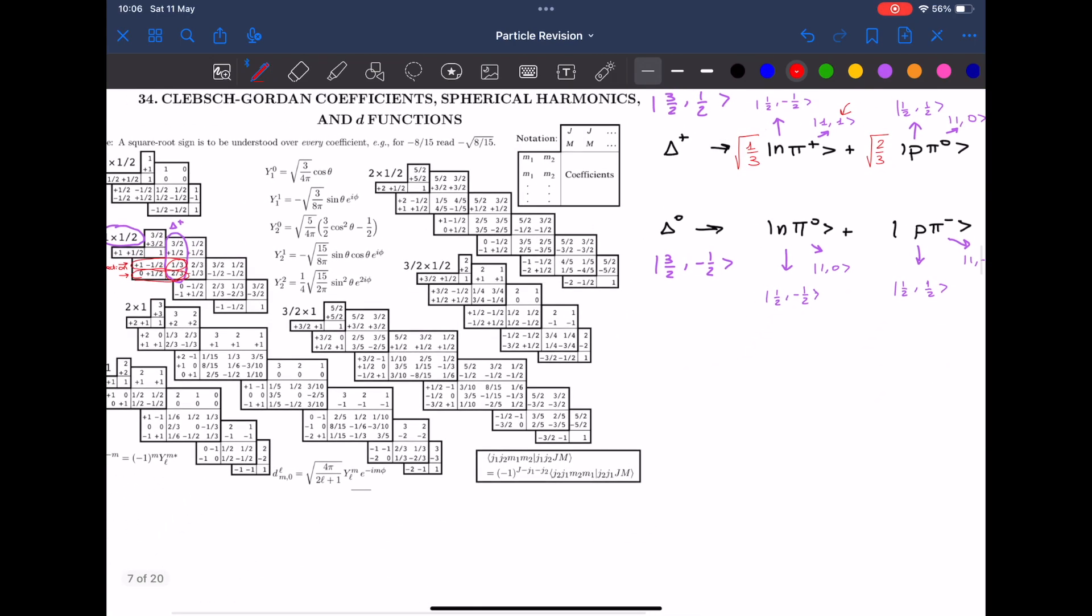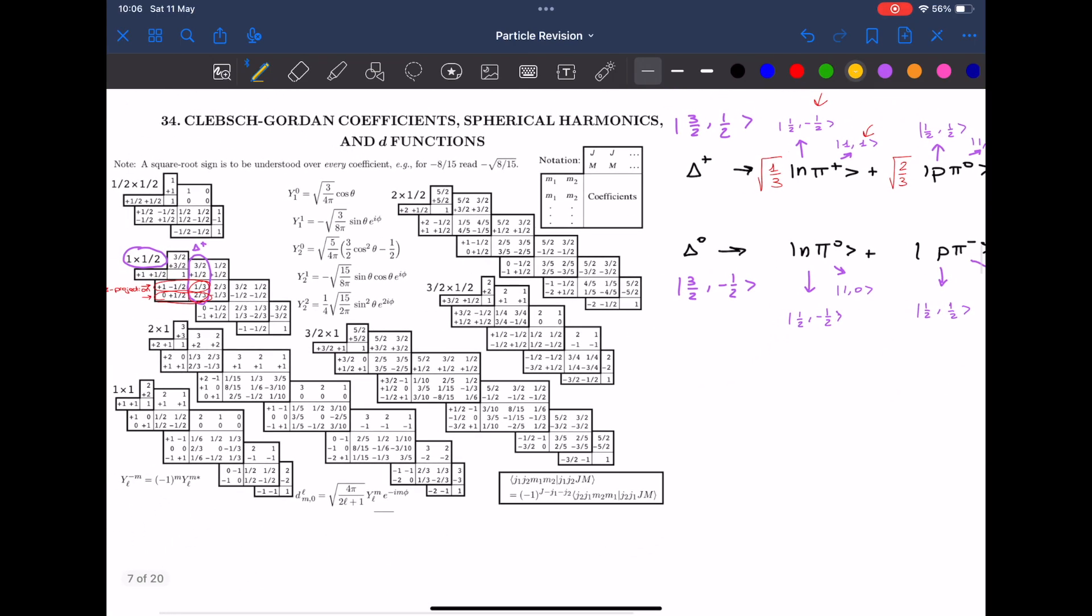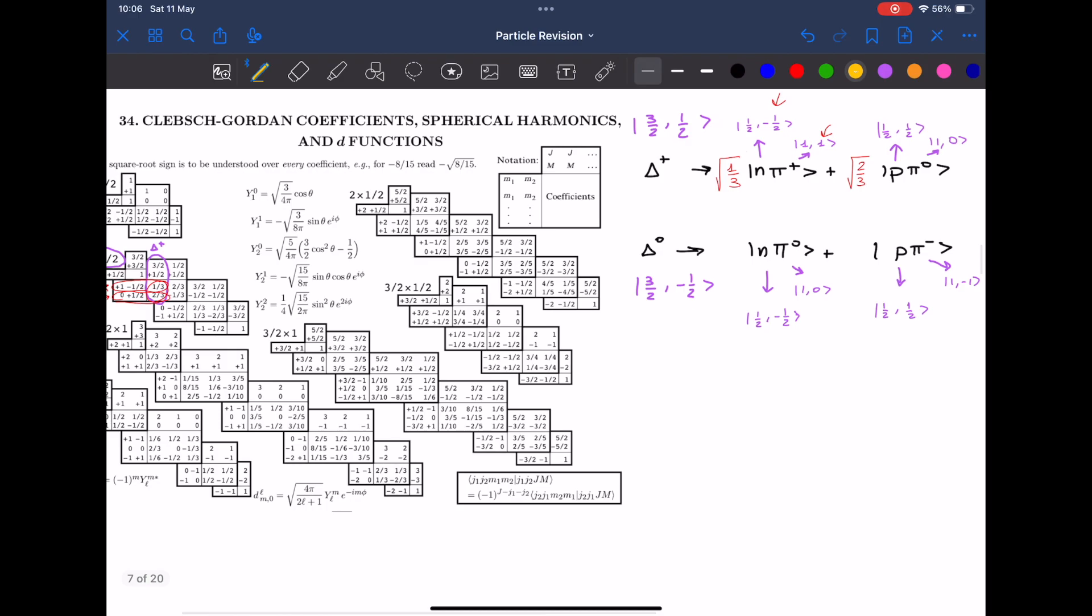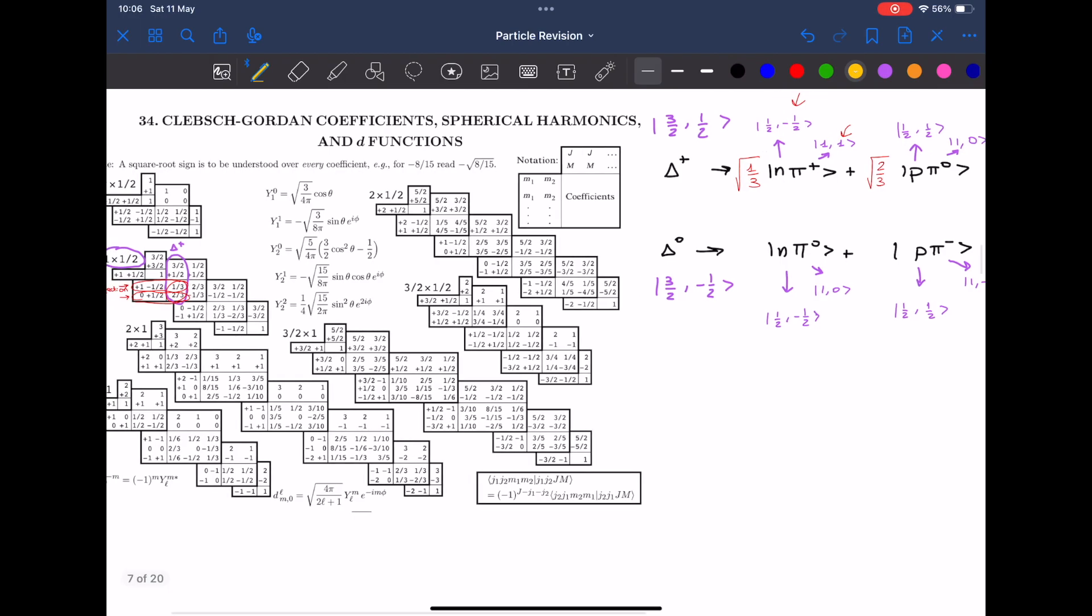Okay so let's do another example now. We will do it for the other decay, so it's delta zero decaying into either a neutron and a pion zero or a proton and a pion minus. Let's find out the probability.